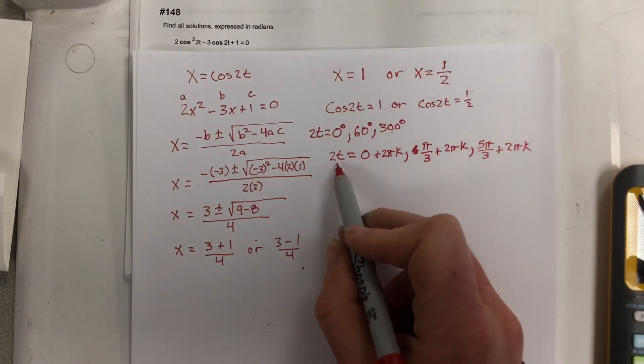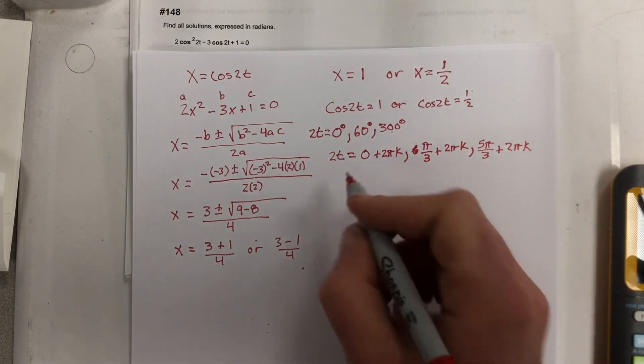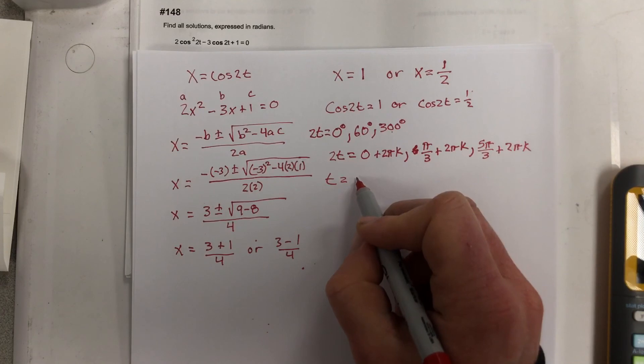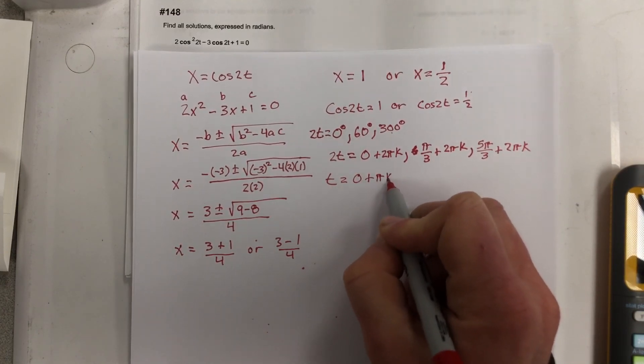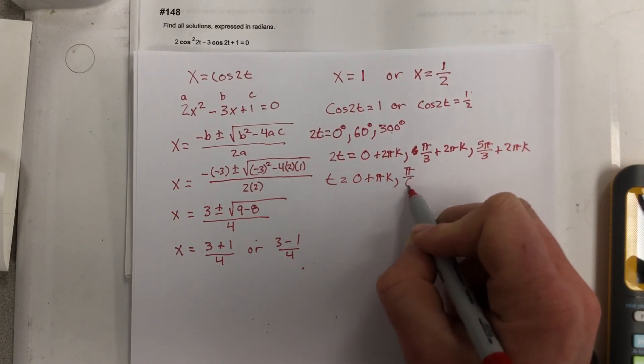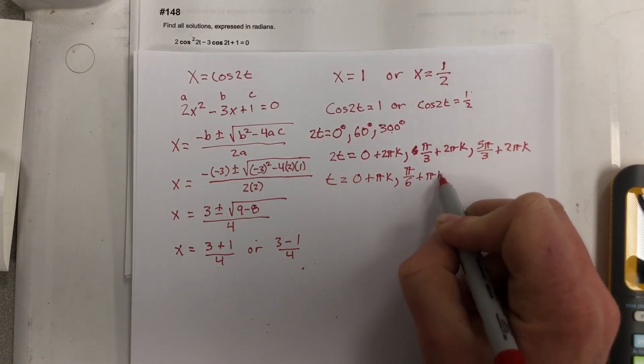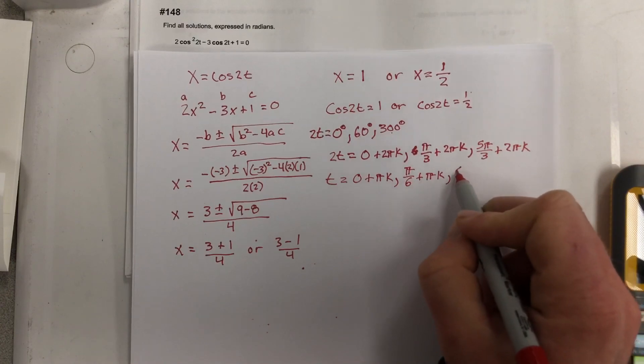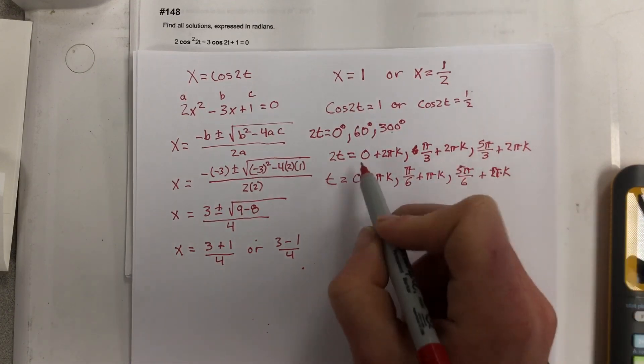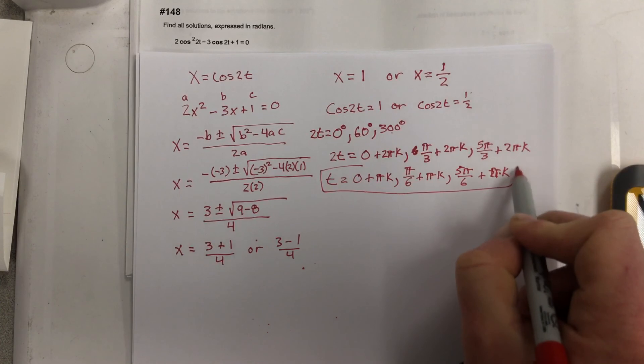And last but not least, I divide by 2 to each of those, and I get t equals 0 plus pi k, comma, pi over 6 plus pi k, comma, 5 pi over 6 plus pi k. So these should be your solutions for t for this problem.